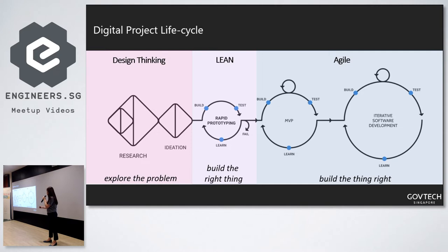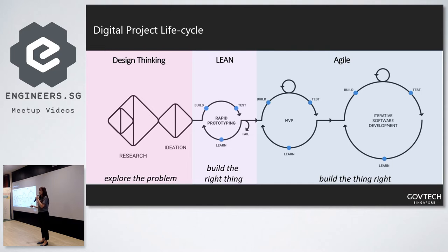Once satisfied, we move on to the MVP — we start building what is required to be launched at a certain deadline. After that, we do iterative software development to improve the product. For MVP, we launched Moments of Life Family in June 2018. We continuously did development, improved the product, and are now moving on to another zone of Moments of Life.